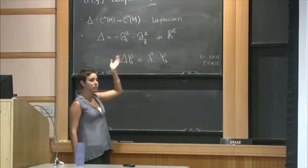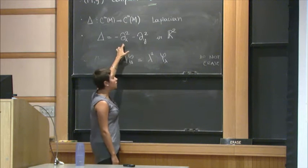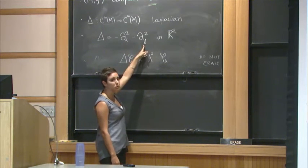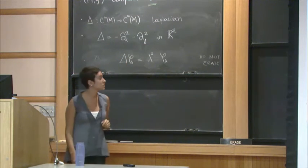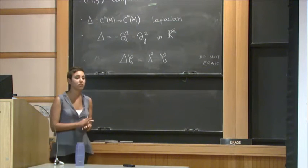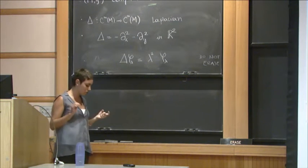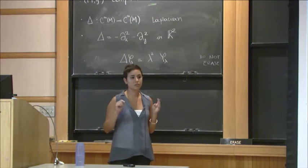Delta is the Laplace operator. In R2, it's simply twice the derivative with respect to x, twice the derivative with respect to y. I'm putting a minus sign in front because I'm asking the Laplace operator to be positive definite. It's on a compact manifold, so the Laplace operator is positive definite elliptic, formally self-adjoined.